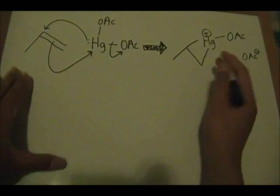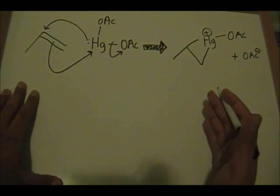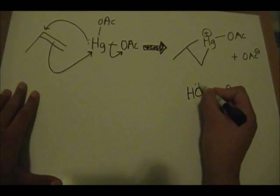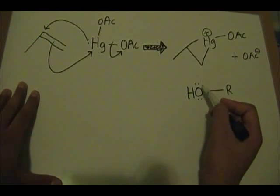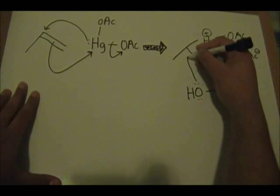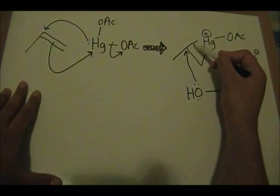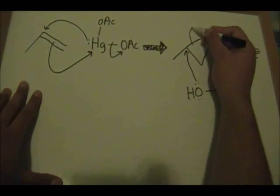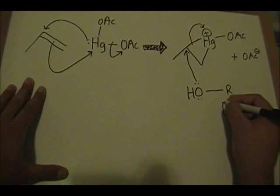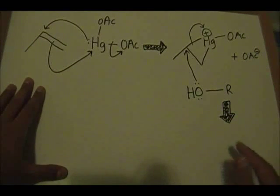Now you're going to break this cyclic intermediate by having the alcohol come into the picture. The lone pairs of the oxygen on the alcohol are what form the bond between the oxygen and this carbon. We draw the arrow there, and you kick off this pair of electrons onto the mercury. That is the second step, and its product is next.